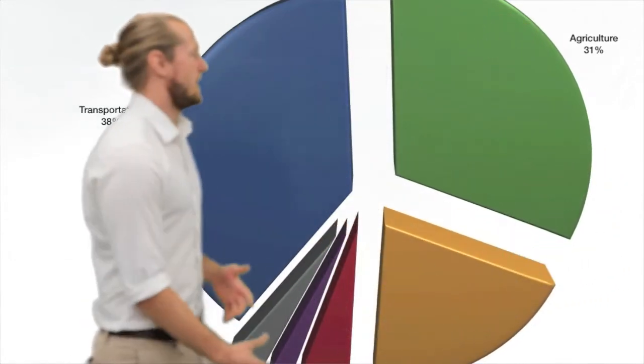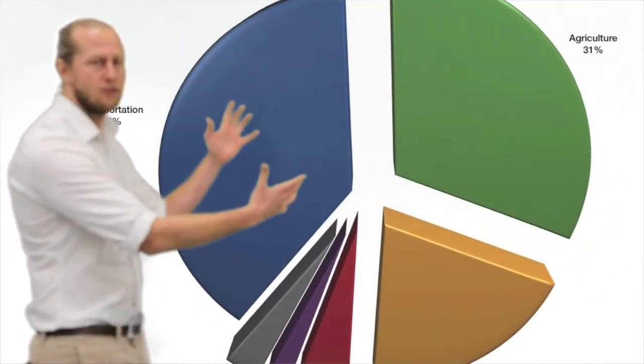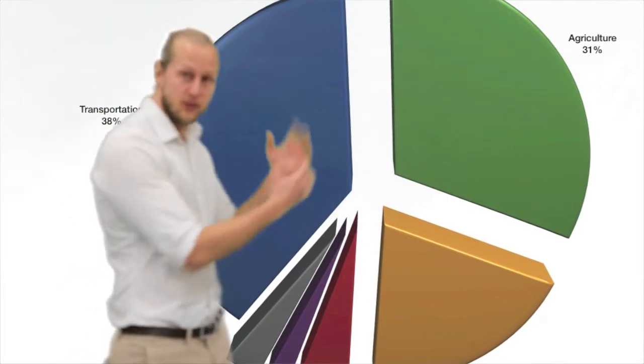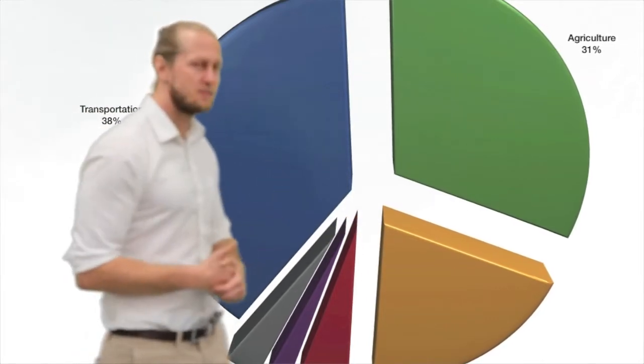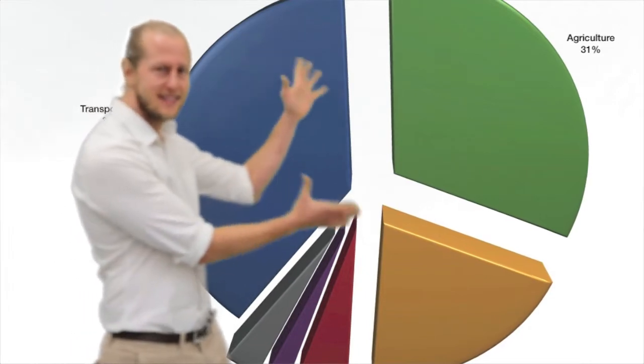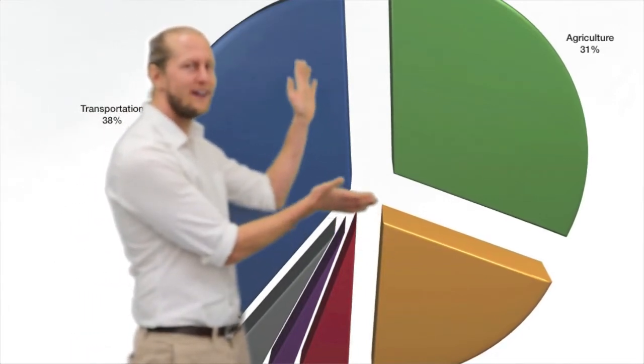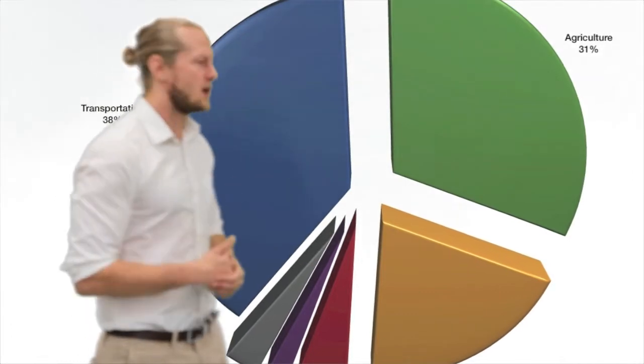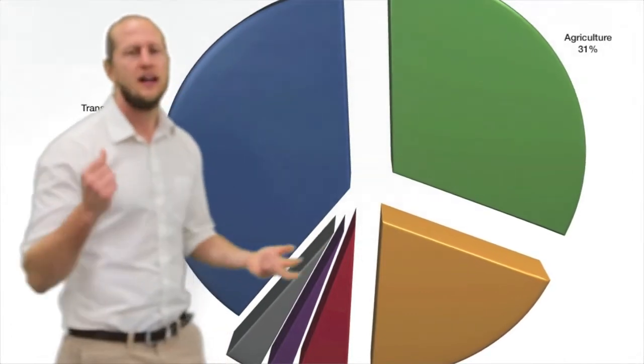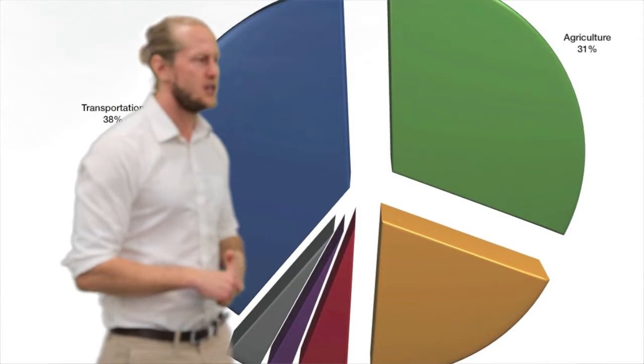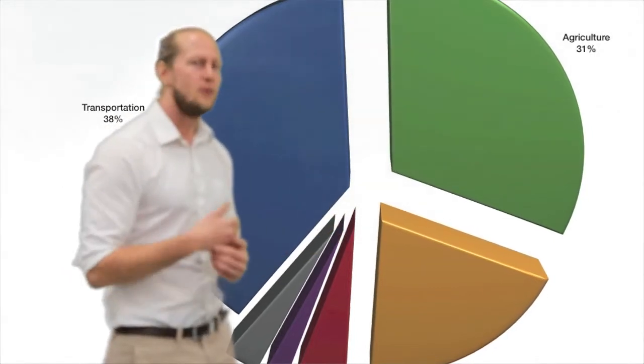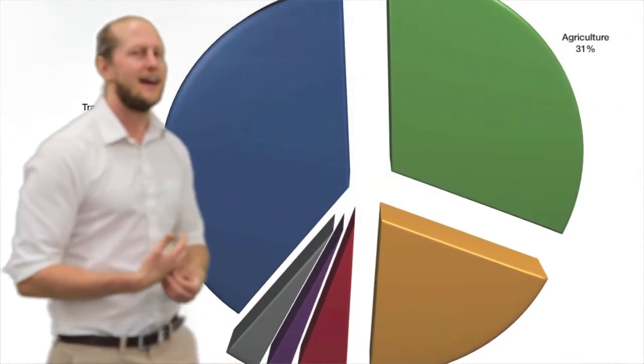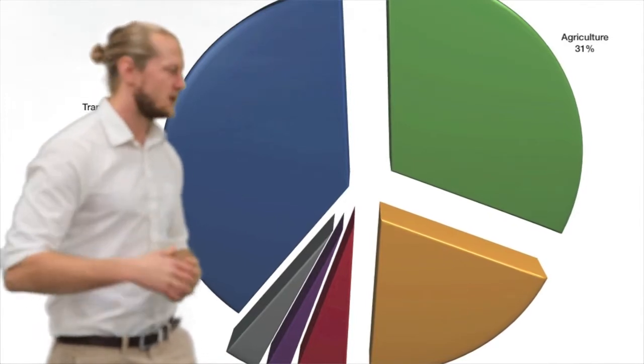The other piece of the pie here is agriculture. And that's 31%. So, almost as much as transportation is agriculture. And I feel like this piece of the pie is quite often not really spoken about in mainstream media. We talk a lot about electric cars and changing our habits for transportation. But as far as agriculture goes, we don't talk about that as much. I want to talk about it.